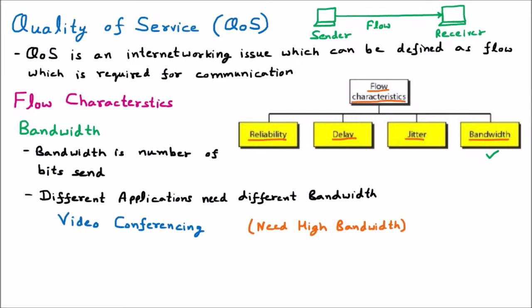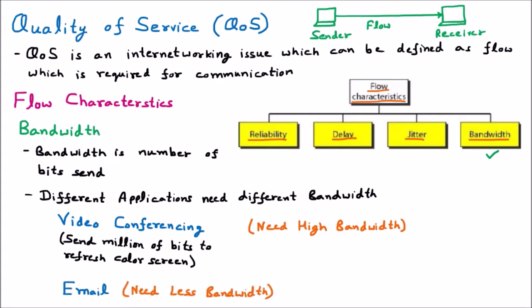For video conferencing, we need high bandwidth, because video is a combination of different images. Sending video means multiple images change, sending millions of bits per second to refresh the color screen. The screen refreshes multiple times, creating image movement that becomes video. Images are made up of pixels that must be refreshed at very high speed, so millions of bits per second are needed, requiring very high bandwidth. For email, very few bits are sent per second, so the bandwidth requirement is very less.